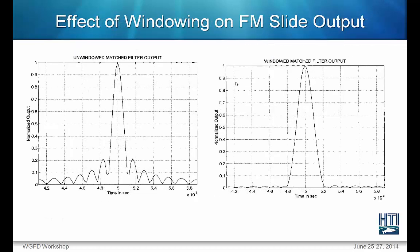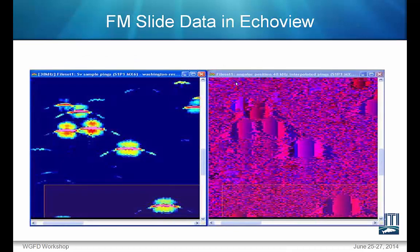However, the matched filter does have an unusual effect on an FM slide signal in that side lobes form around the pulse. This can be dealt with using a windowed matched filter, which clears the pulses around the center that are not the main lobe. In terms of the data, this is what a ping looks like returning when using an FM slide signal. The programmers at HTI that first saw this data thought there was a bug, but this is simply a feature of the FM slide signal — the lobes around the main lobe reflect off the target and return with lower voltage returns.